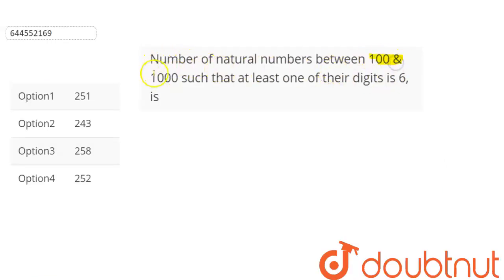We are given four options. So here we are given the numbers between 100 and 1000, which means we are given all three digit numbers.